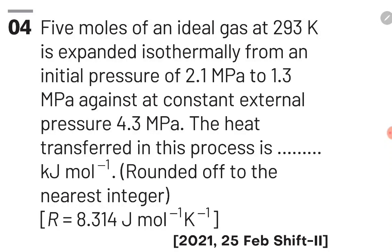Hi everybody, welcome to this video on the chapter of thermodynamics. The first question of this chapter is: 5 moles of an ideal gas at 293 Kelvin is expanded isothermally from an initial pressure of 2.1 MPa to 1.3 MPa against a constant external pressure of 4.3 MPa. The heat transferred in this process is? To solve this question, we will use the first law of thermodynamics: ΔU = Q + W.